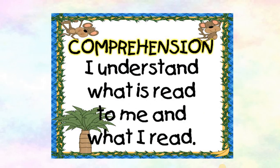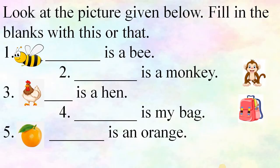Now it's comprehension time. Let's check. Here are some questions — look at the picture given below and fill in the blanks with 'this' or 'that'. Number 1: That is a bee. Number 2: That is a monkey. Number 3: That is a hen. Number 4: That is my bag. Number 5: That is an orange.